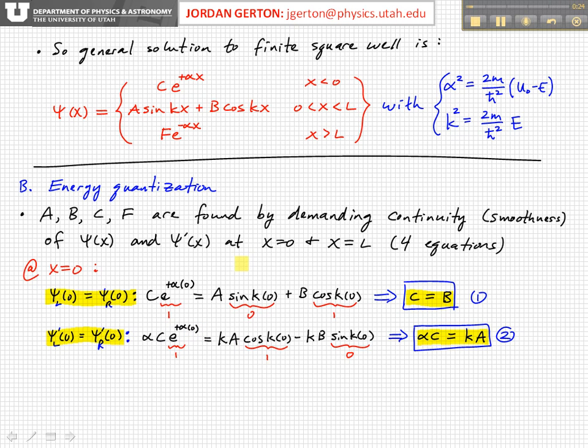And similarly, the derivative of sine is cosine, and you take the derivative of the argument, you get the k, and the derivative of cosine is minus sine. And so, if you look at this, this basically gives you this. From this equation, we get this relationship between c and a: alpha c is equal to k times a.